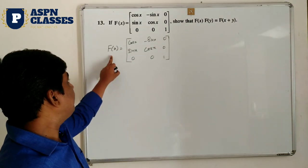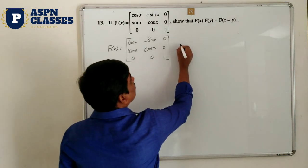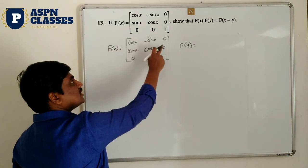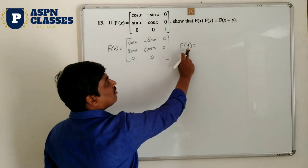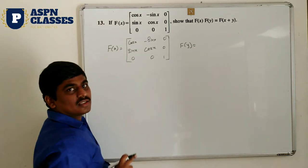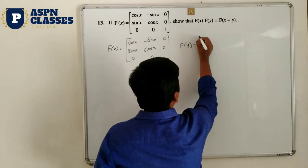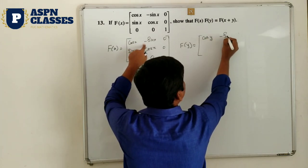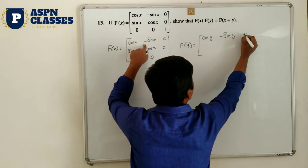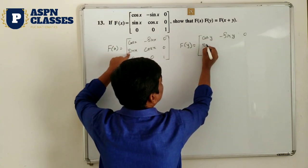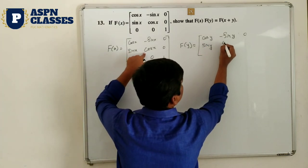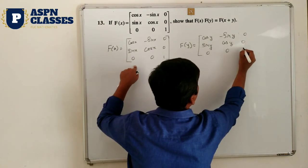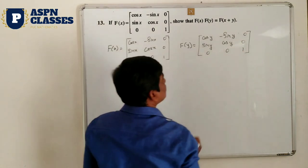Here f(x) is given. Now write f(y): it is the same result as f(x) but with the variable changed to y. That result is: [cos(ay), -sin(ay); sin(ay), cos(ay); 0, 0, 1] — this is your f(y).